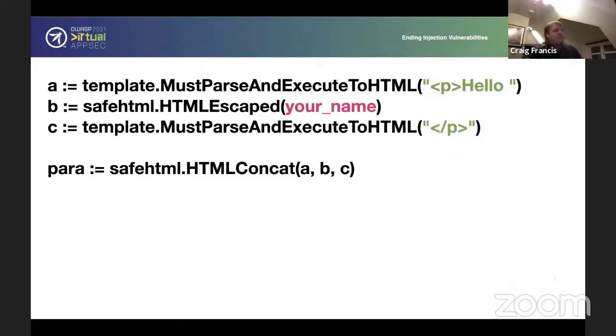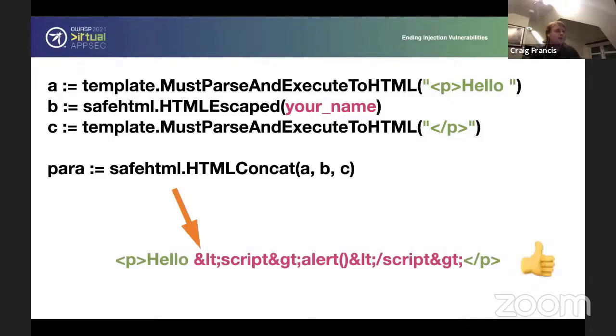When you come to the HTML side of things, you go to the template package first, and you say a method of must pass and execute to HTML, and then you put in your variable untyped string of hello. SafeHTML escaped is the second line, and that's where you take the user value, and you put it in. And then the variable, the third one, C, finishes this off with the poison paragraph tag. And then we use the SafeHTML package to then concatenate those three things together. And that's how you do it correctly. Everyone's happy, all good.